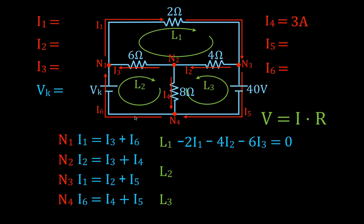For loop number two, we start here again and go clockwise. This time we're going against the current as we go across the 6-ohm resistor, so that's positive 6I3. Then we go with the direction of current in the next branch — we know I4 is 3 amps and the resistance is 8, so the voltage is negative 3 times 8. Then we come across the unknown voltage source going from negative to positive terminal, which is a positive voltage gain — I'll put VK for unknown voltage. Set that equal to zero.